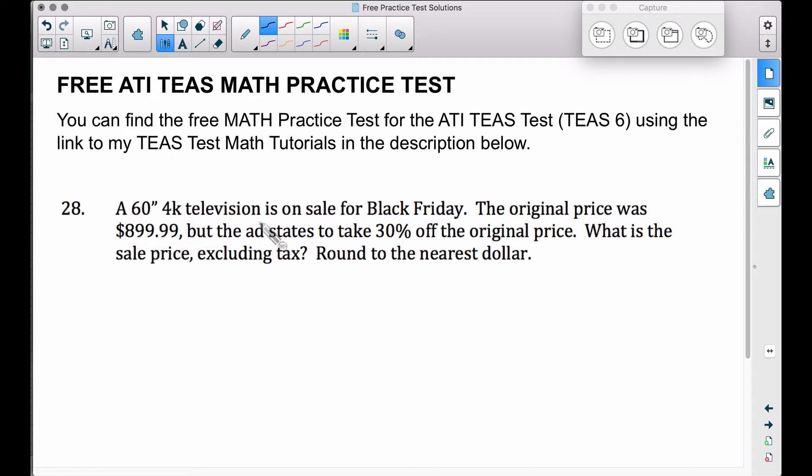Number 28, a 60-inch 4K television is on sale for Black Friday. The original price was $899.99, but the ad states to take 30% off the original price. What is the sale price, excluding tax, round to the nearest dollar?